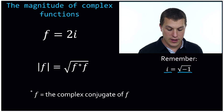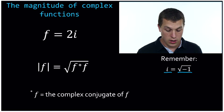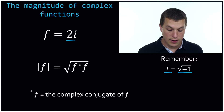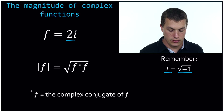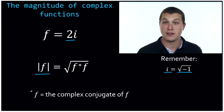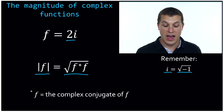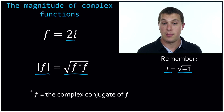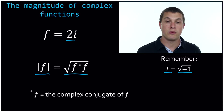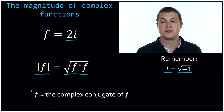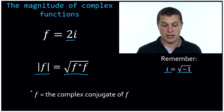So if I have any function or complex number, say 2i, I can calculate its magnitude — that's what this notation is with those two bars — by taking the square root of that number times its complex conjugate. What's its complex conjugate? We'll talk about that in just a second. But basically what you're doing is multiplying these two guys by each other and taking the square root.